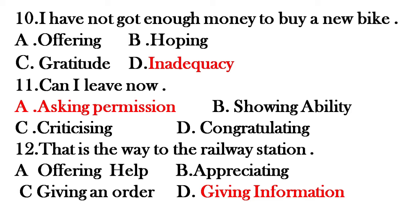The answer to question number ten is inadequacy. Question number eleven's answer is asking permission, whereas giving information — option D — is the answer to question number twelve.